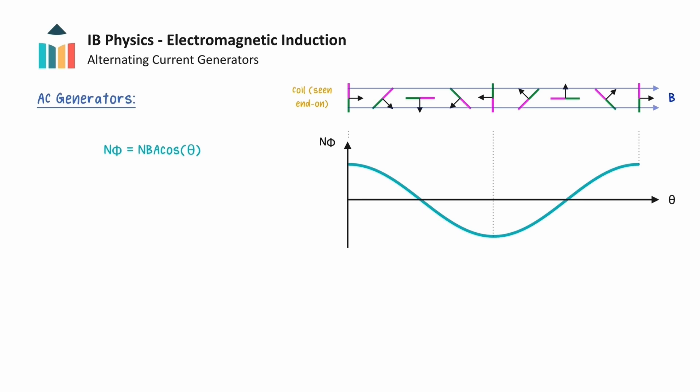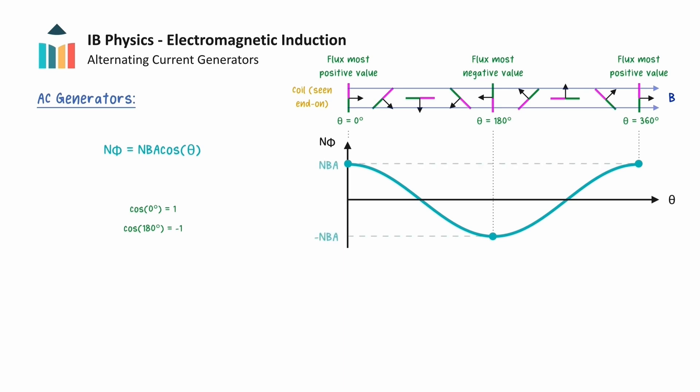Whenever the plane of the coil is perpendicular to the magnetic field — at theta equals 0 degrees and 180 degrees — the flux linkage will assume its maximum positive and negative values. If we substitute these angles into the flux linkage equation, and remembering that the cosines of these angles are either positive or negative 1, we find that these maximum values correspond to positive and negative NBA, where N represents the number of turns of the coil, B is the magnetic flux density, and A is the area of the coil.